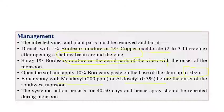Foliar spray of metalaxyl at 200 ppm or aluminum fosethyl (fosethyl-aluminum) at 0.3% is required before onset of monsoon. The systemic action persists for 40 to 50 days, so another spray is required before the onset of another monsoon season.